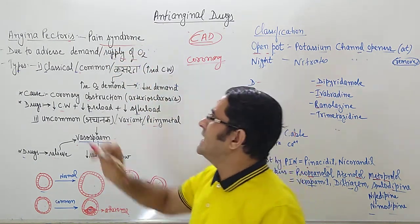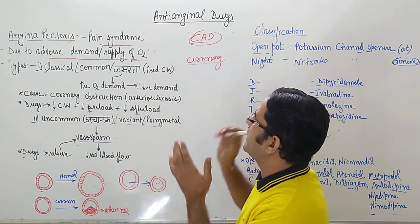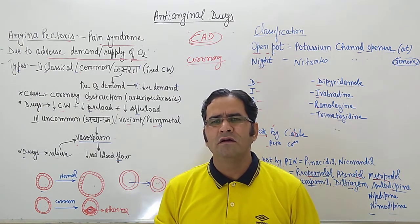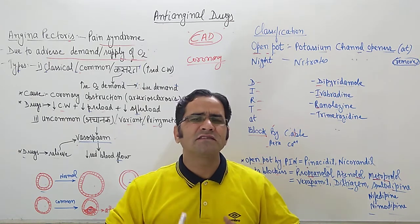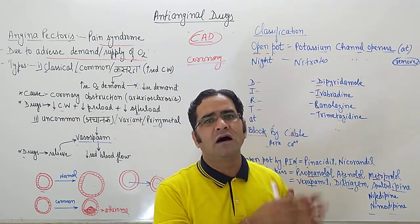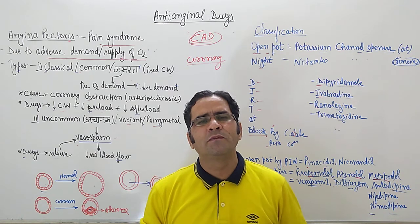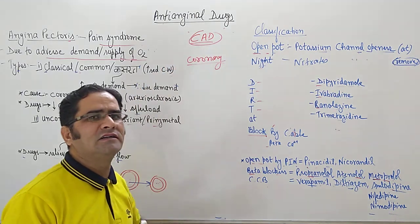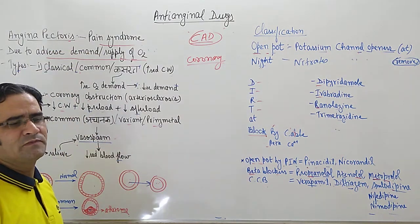Angina is a pain syndrome due to an adverse demand and supply of oxygen. Whenever there is increased energy need — when the person does exercise or heavy work — the load goes on the heart, because the heart has to supply more blood to deliver more oxygen and produce more energy. But due to blockage of the coronary artery, the heart cannot pump sufficient blood, resulting in an imbalance between demand and supply of oxygen.